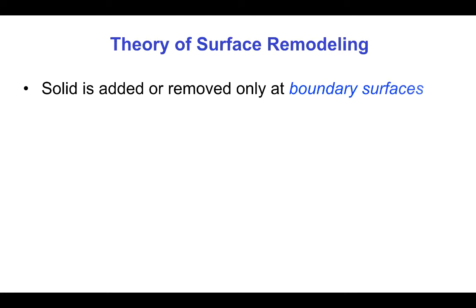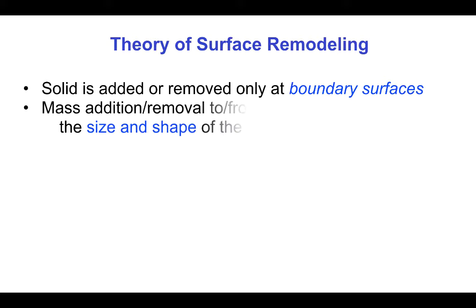So let's look at an example of the theory of surface remodeling. Solid is added or removed only at the boundary surfaces and the mass addition or removal to or from the bone solid only changes the size and/or shape of the bone, not its mechanical properties.